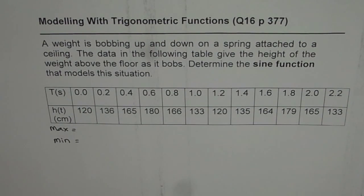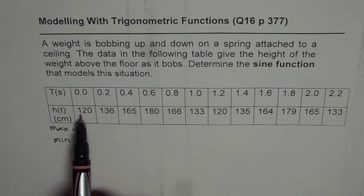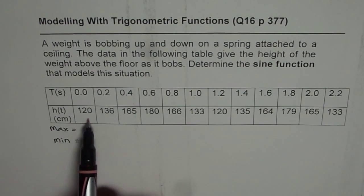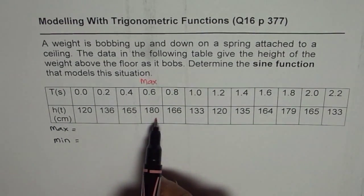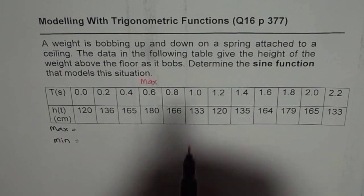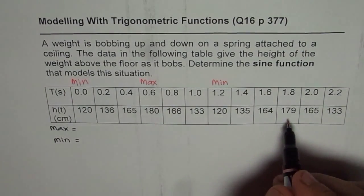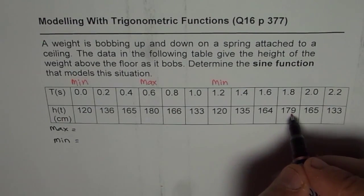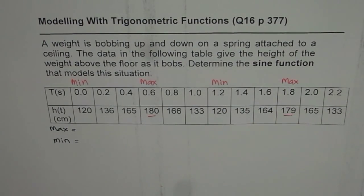So let's start by analyzing the data and finding maximum and minimum value. Now in the first column we are given time 0.0 and height is 120. Now as the time increases, height increases and then falls down. So we have a maximum here of 180 and it falls down to 120. So 120 is the minimum value. So that means it starts with the minimum value. And then it again starts increasing. So the height becomes 179, which is kind of close to 180. So that becomes the maximum value. These are the values which can help us to find all the parameters required for a sine function.